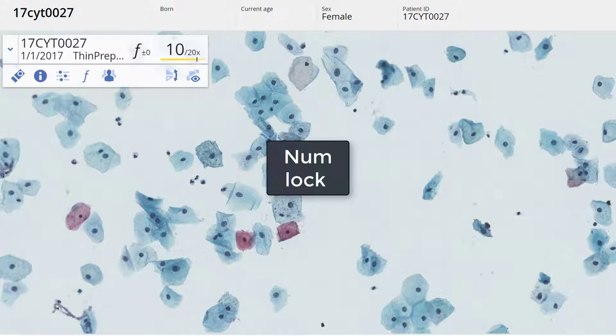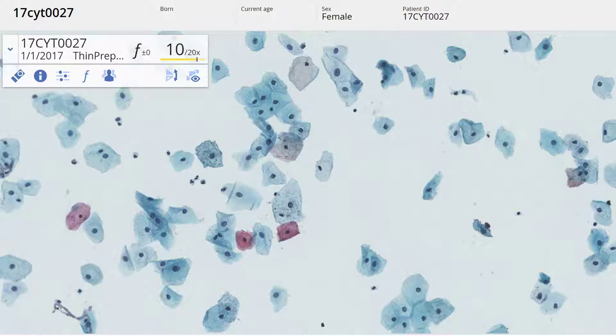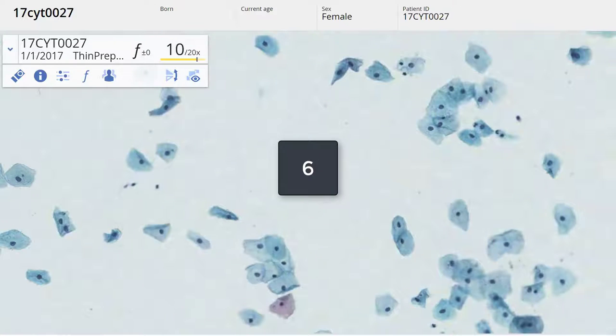With the number lock on, using the number keypad, I use number 6 to pan right a whole view.